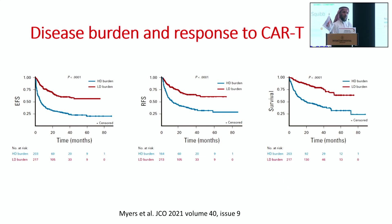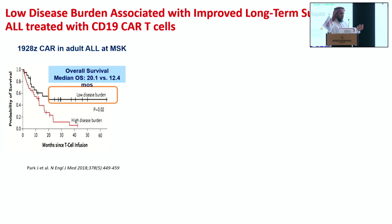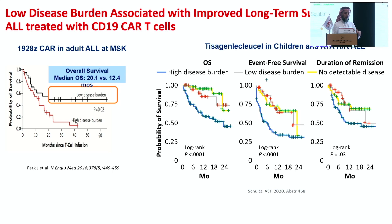Disease burden at the time of infusion is also important. High disease burden, defined as more than 5% blasts in the bone marrow, is associated with lower event-free survival, relapse-free survival, and overall survival. This was shown in the same study and confirmed at Memorial Sloan Kettering and in other studies. We should intervene to reduce disease burden prior to CAR-T infusion through bridging treatment.